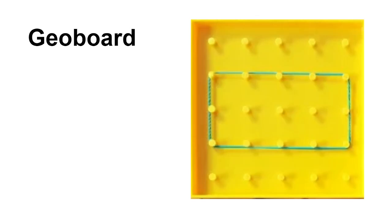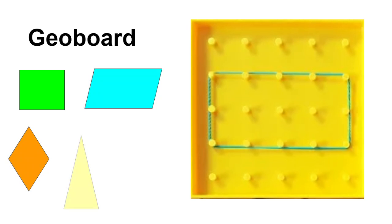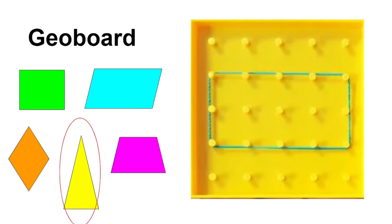We can use a geoboard to make shapes that have parallel lines. This rectangle has two pairs of parallel lines. I'm going to show you some shapes and some of these shapes have parallel lines and one does not. Can you find the one shape that doesn't have any parallel lines? Did you say the triangle? None of the lines on the triangle are parallel. If you got it right, give yourself a thumbs up.